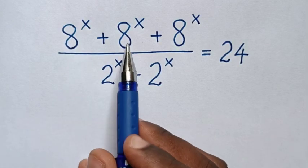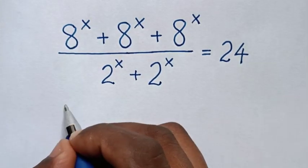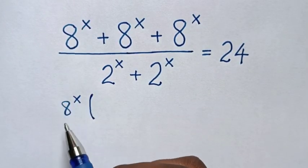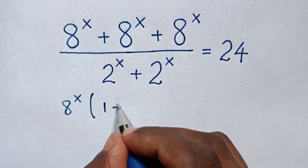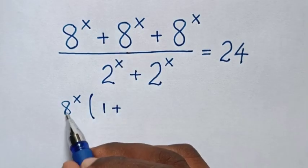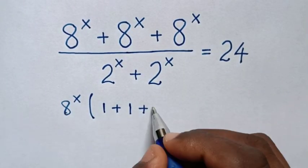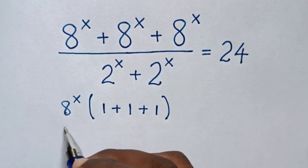Now from the numerator, 8 power x is common. So we take 8 power x out of bracket. 8 power x divided by 8 power x is 1, plus 8 power x divided by 8 power x is 1, plus 8 power x divided by 8 power x is 1, bracket over.